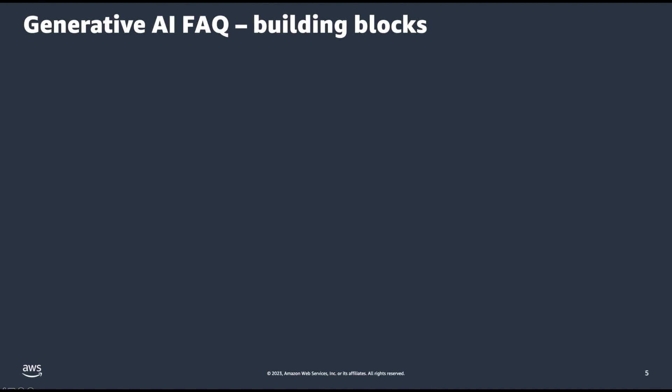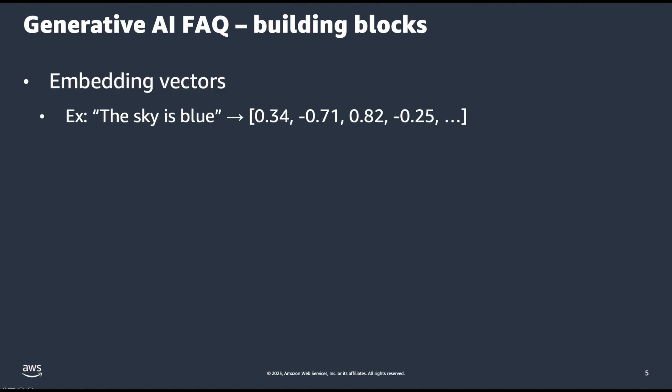One useful tool is embedding vectors. Large language models store text data as numbers. In order to store large amounts of information or quickly search for related information, you will need to convert text into vectors. In this example, the text "the sky is blue" is converted into a vector, which is basically a set of numbers.